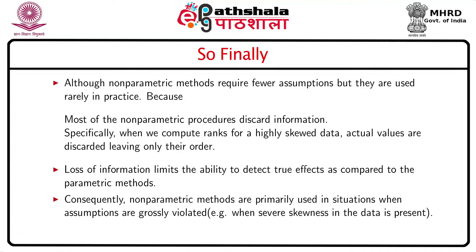Nonparametric methods should be primarily used in situations when assumptions are grossly violated — that is, when severe skewedness in the data is present. If we find signs of severe skewedness, we must use nonparametric methods. But if the deviation from normality or from symmetry is very nominal, we could use the normal t-test, and in that case the t-test will be efficient.